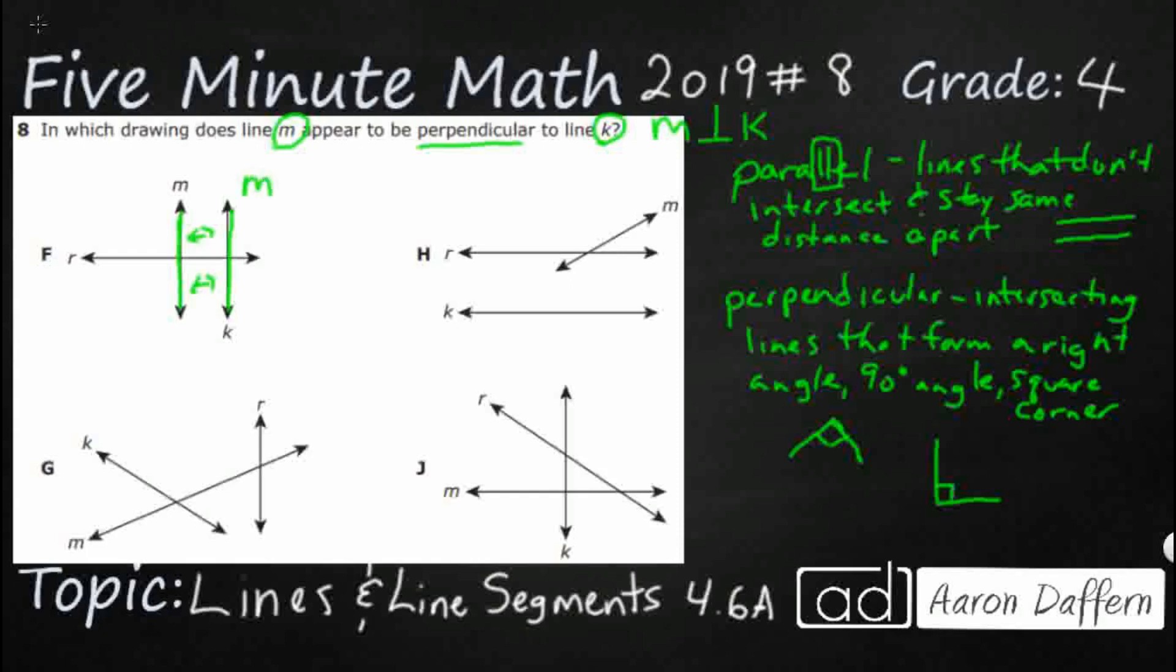So instead of saying M and K are perpendicular, we can say M is actually parallel to line K. So it's not what we want. Now M is perpendicular to R and so is K, but we're just looking for M and K.